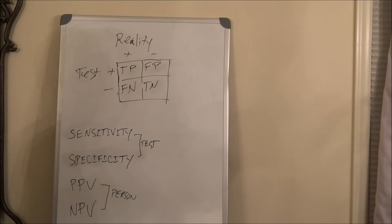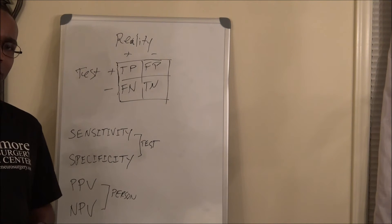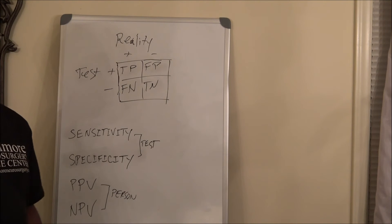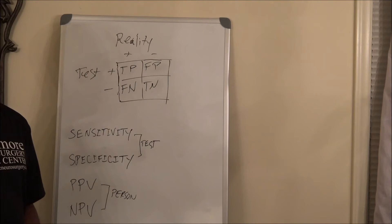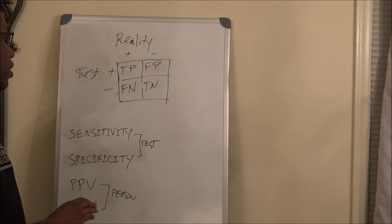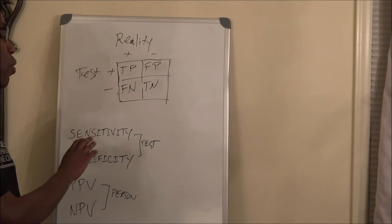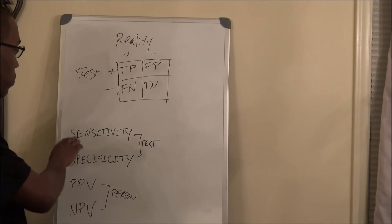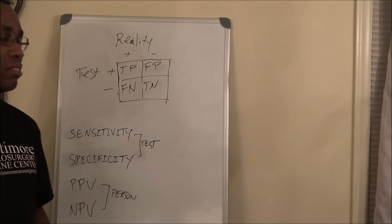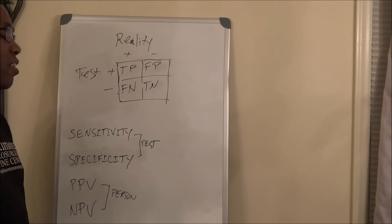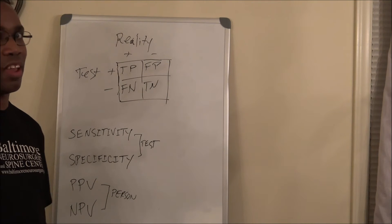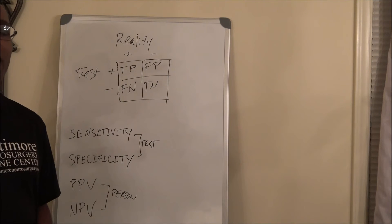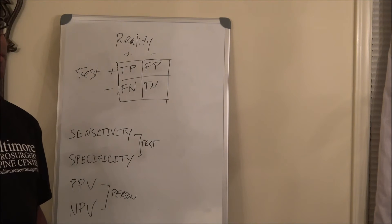When I say that — as far as sensitivity, when the test is positive, what is the probability that the person has the disease? That's what sensitivity is all about. Specificity is when the test is negative, what is the probability that the person does not have the disease?